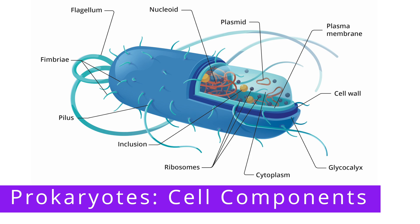First of all, we have the cytoplasm, which is everything contained within the plasma membrane. This includes a gel-like substance, which is cytosol, and all the structures suspended in the cytosol.